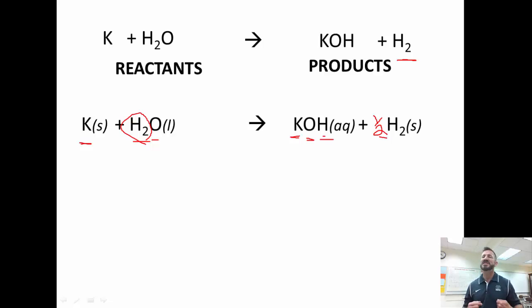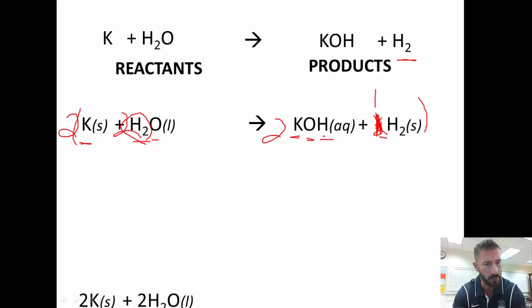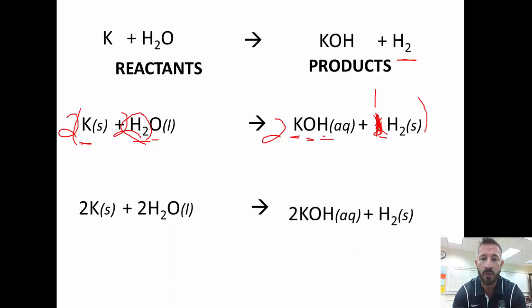So, now what I'm going to do is I'm going to get rid of that fraction. So, I'm going to take the entire thing, and I'm going to multiply it by two. So, that would give me two potassiums, two waters, two potassium hydroxides, and then just one hydrogen. So, we'll put a one there. So, I'm going to show you that, again, written neatly. And we'll go over it again and show that it's balanced.